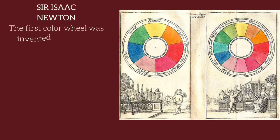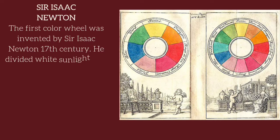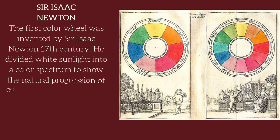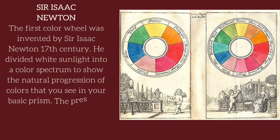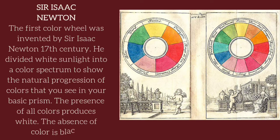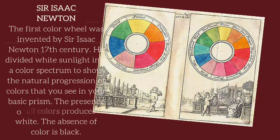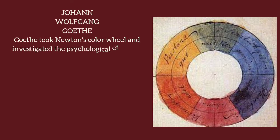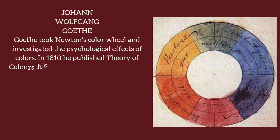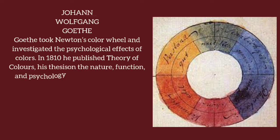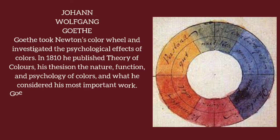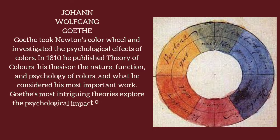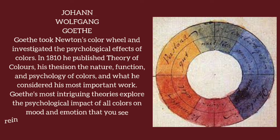The first color wheel was invented by Sir Isaac Newton in the 17th century. He divided white sunlight into a color spectrum to show the natural progression of colors that you see in a basic prism. The presence of all colors produces white; the absence of color is black. Goethe took Newton's color wheel and investigated the psychological effects of colors. In 1810, he published Theory of Colors, his thesis on the nature, function and psychology of colors, which he considered his most important work.